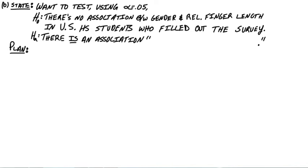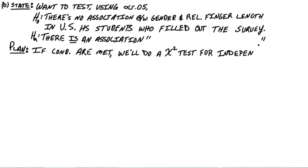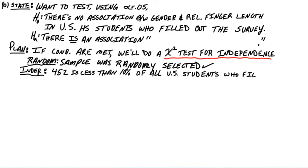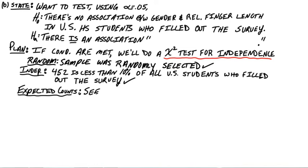For the plan step, let's start by naming the test. We have to be specific: it's a chi-square test for independence — not just a chi-square test. For conditions: randomness — our sample was randomly selected, one overall group, randomly selected. For independence: 460 is definitely less than 10% of all U.S. students who filled out the survey, so we're good on the 10% condition. For the last condition, we'll check expected counts in the table.